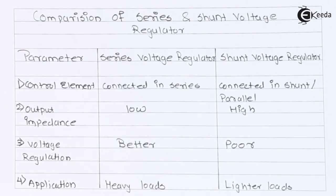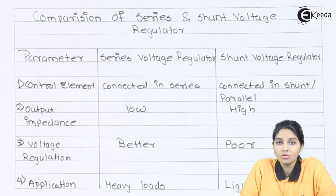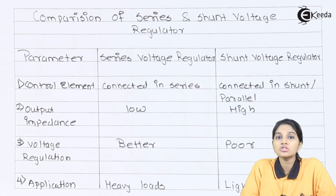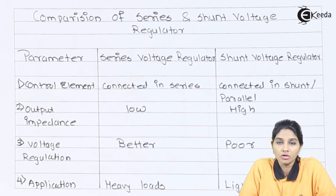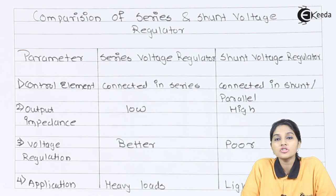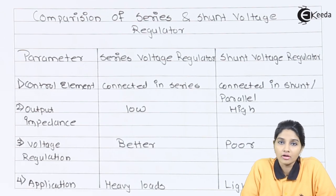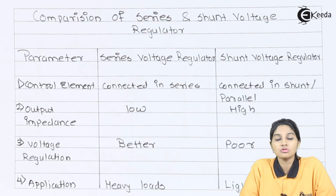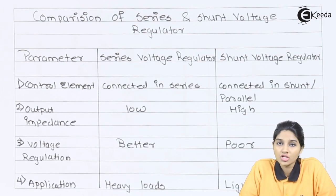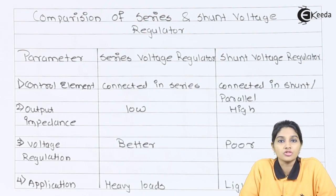The next parameter is efficiency. For heavy load current, the efficiency of a series voltage regulator is good, whereas the efficiency of a shunt voltage regulator is good for low or lighter load current. So this is what covers the series voltage regulator and the comparison between series and shunt voltage regulators.